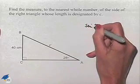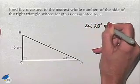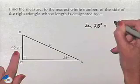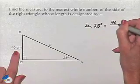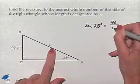So we're going to take the sine of our angle, 28 degrees, and that's going to equal the side opposite, 40, divided by the length of the hypotenuse, which is C.